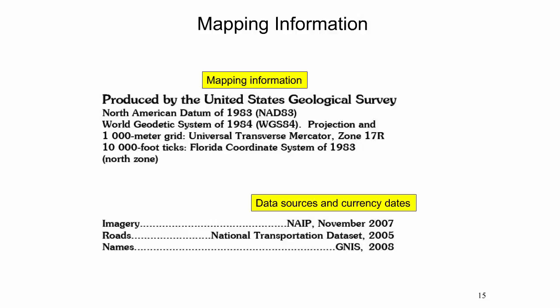All US Topo maps are cast on the North American Datum of 1983, also known as NAD 83, or on the World Geodetic System of 1984, also known as WGS 84. The two datums can be considered equivalent at this scale. Further, all maps are cast on the Universal Transverse Mercator projection, where the zone number is also provided. In the case of the Gainesville East quadrangle, UTM Zone 17 is used. Additionally, a list of data layers with sources and currency dates is provided.